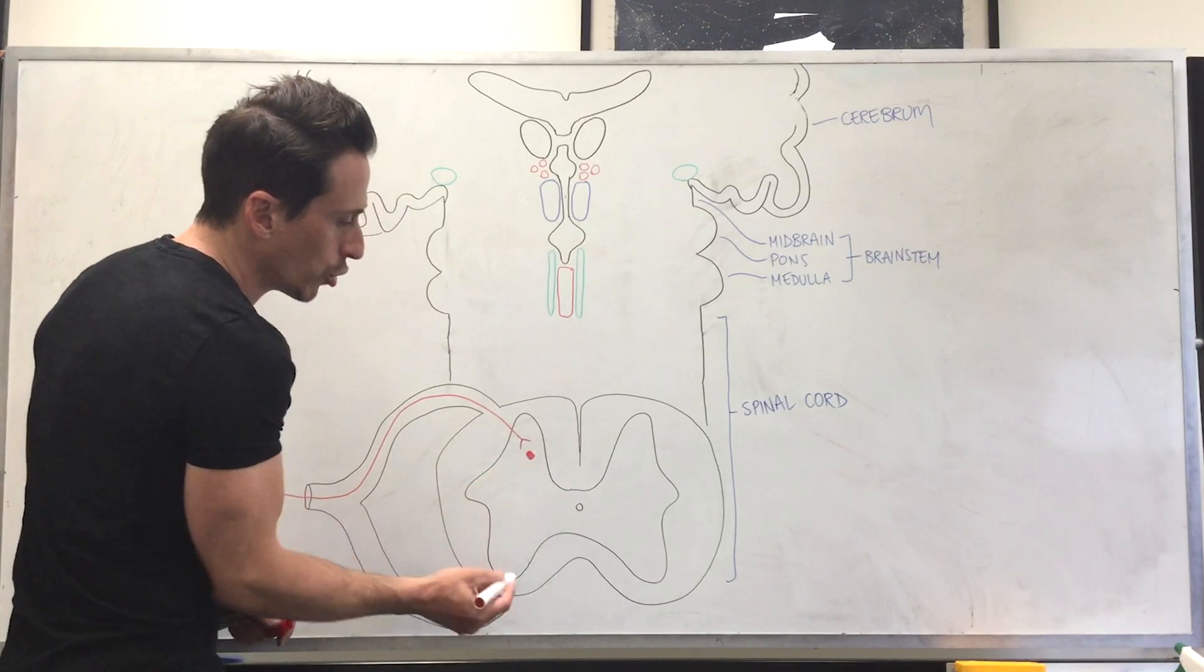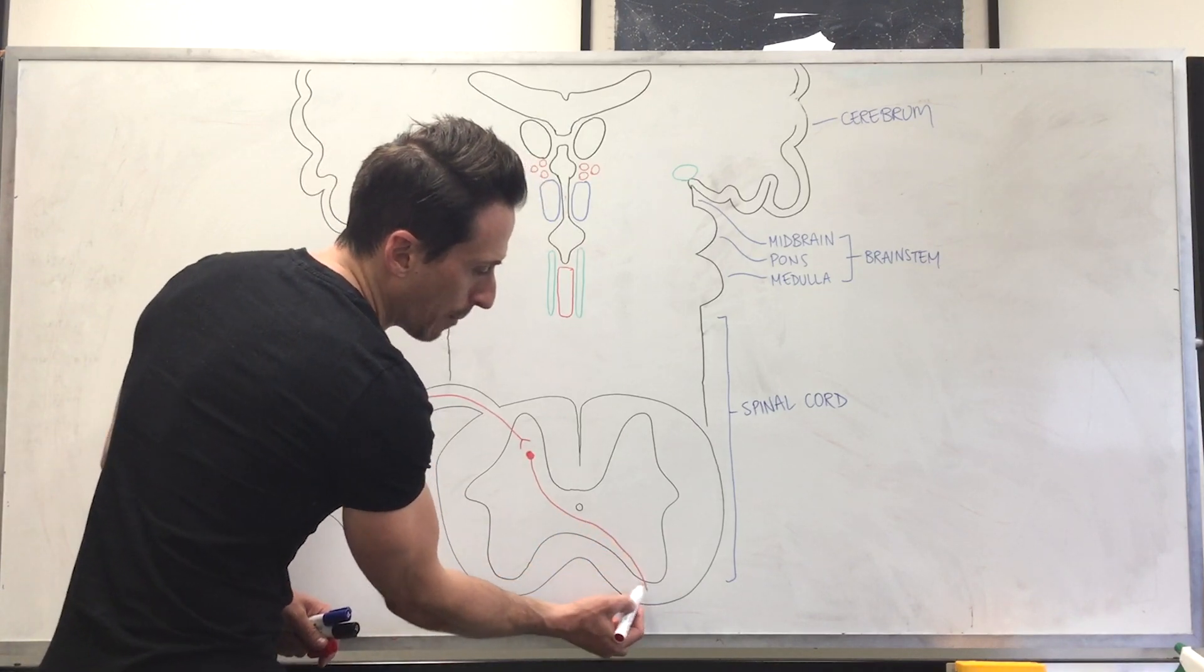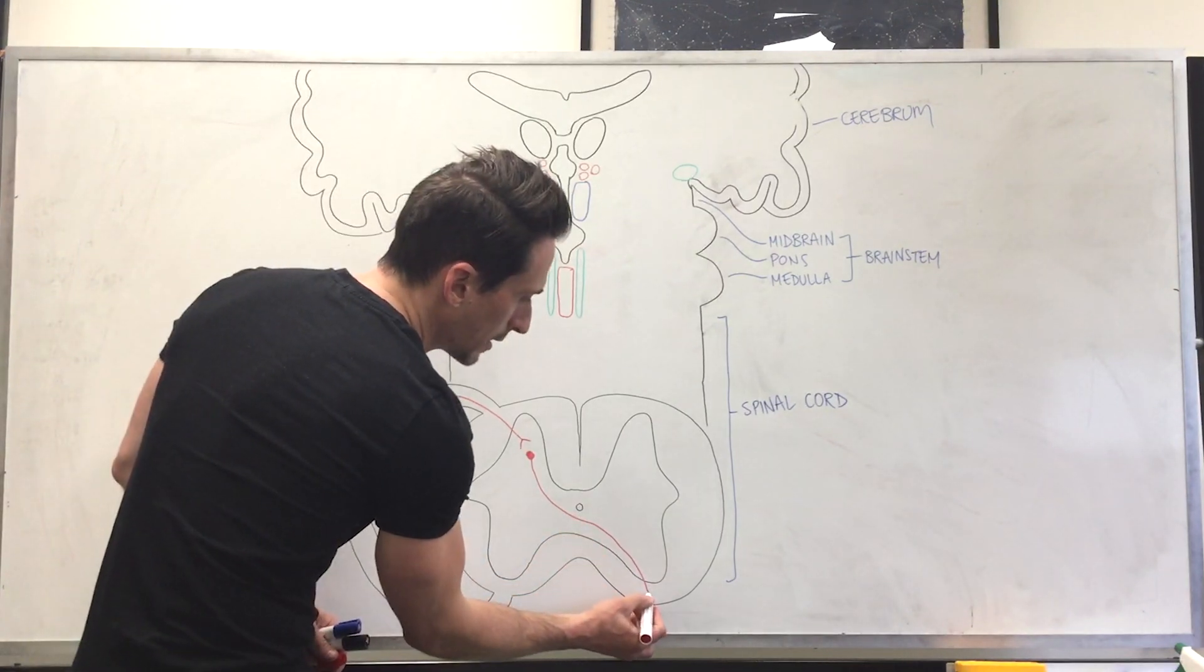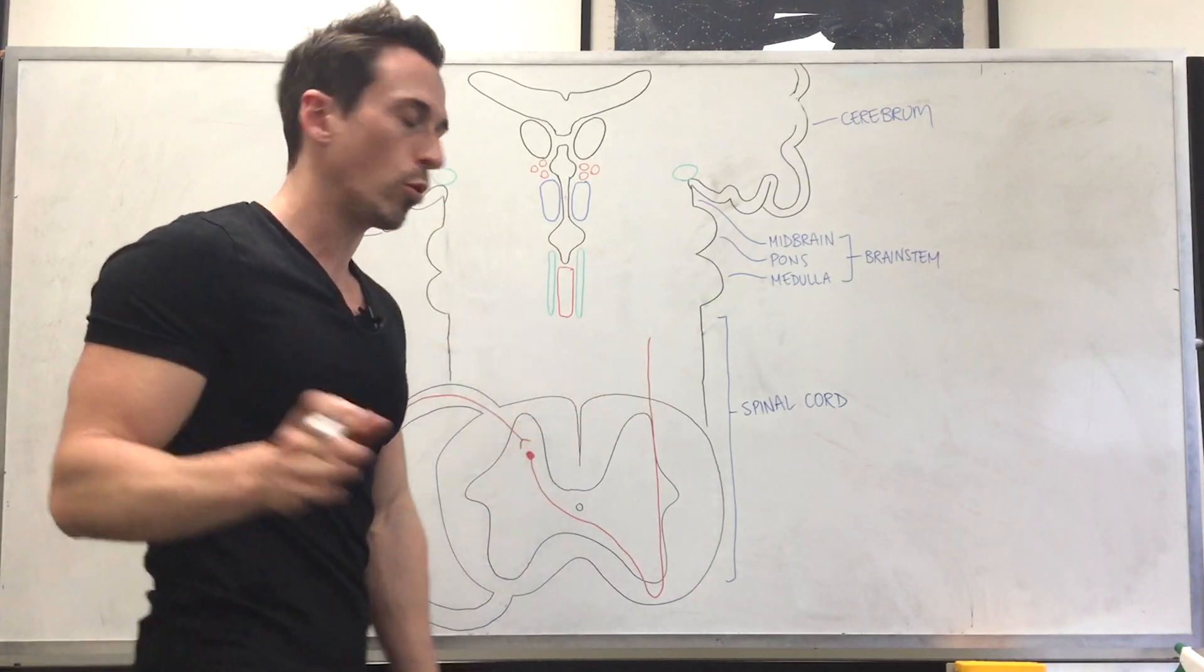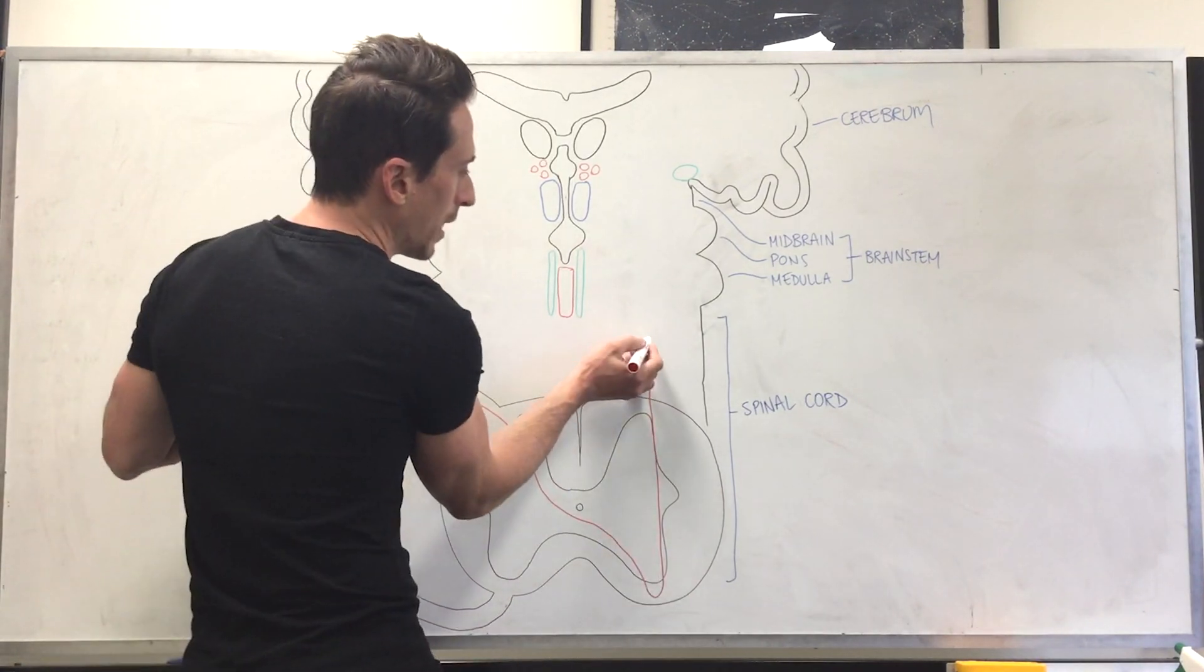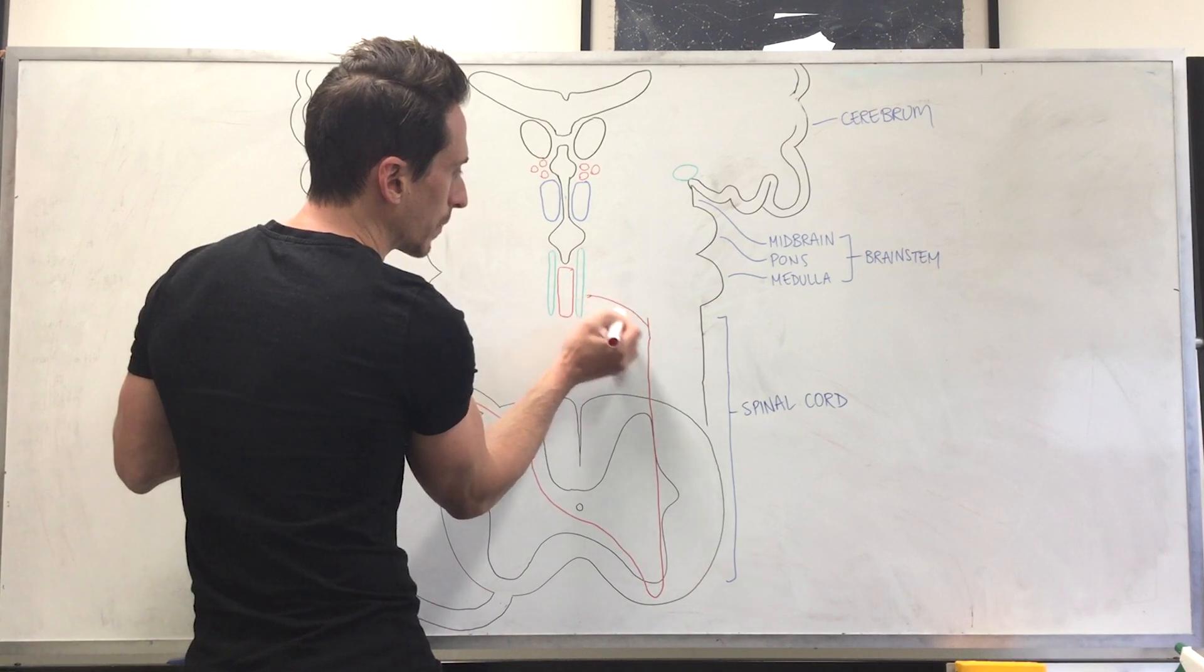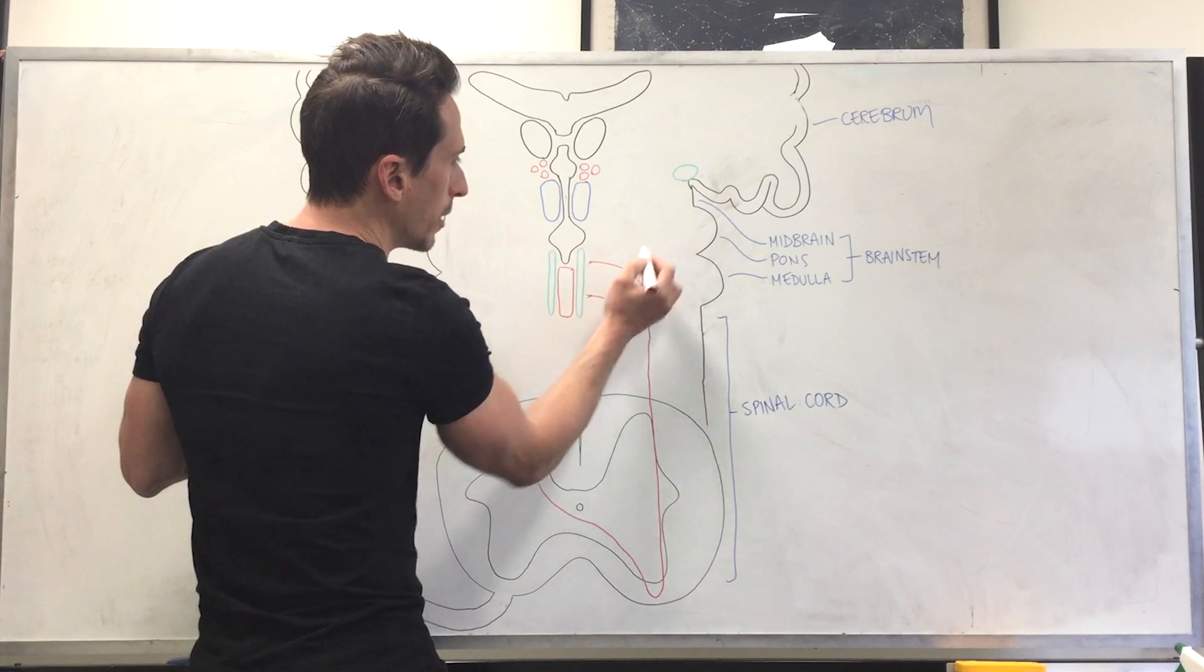This second neuron then decussates, or crosses over to the other side, goes into this bit of white matter here called the spinothalamic tract, and it ascends up the spinal cord. Now, as it ascends up the spinal cord, here's an important point. As it ascends up, it sends afferent signals to a couple of different areas of the brain.